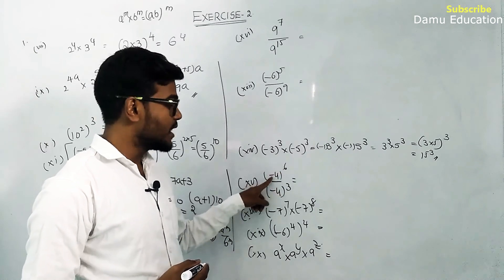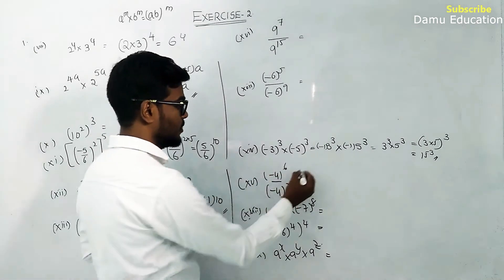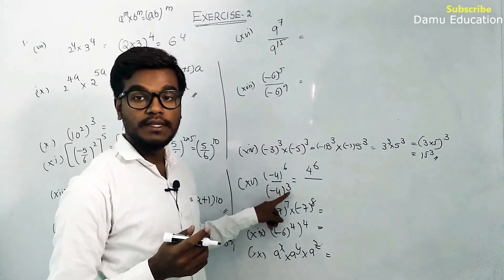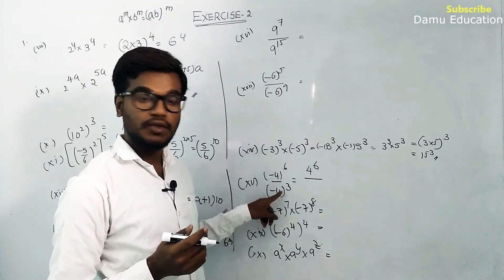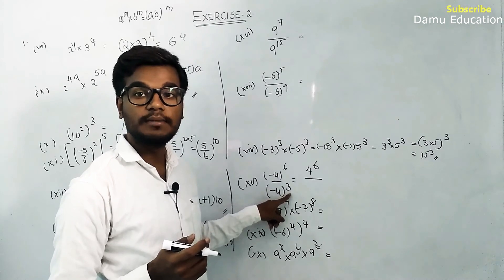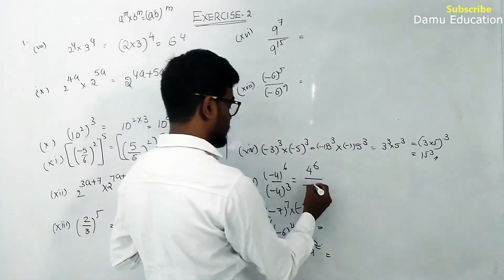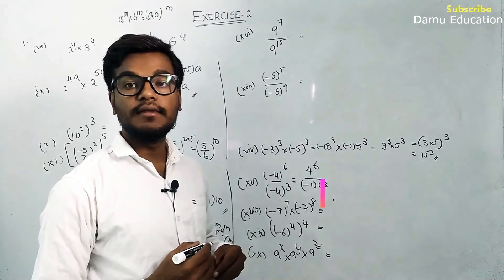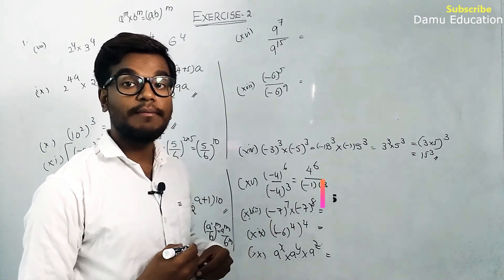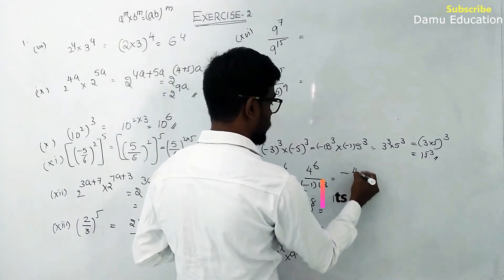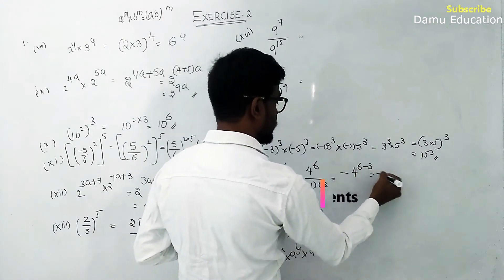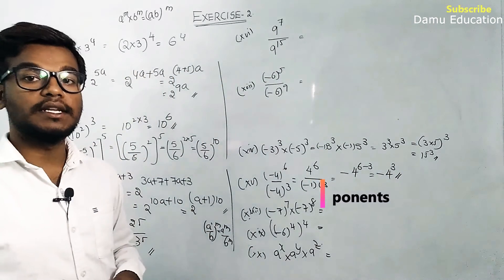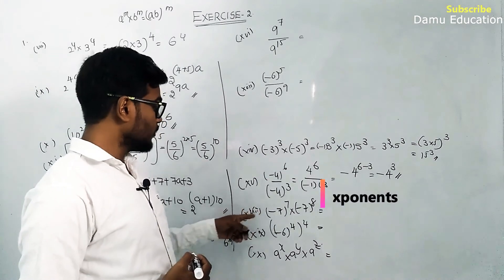Next: minus 4 whole power 6 by minus 4 whole cube. For power 6 (even), minus becomes plus, giving 4 power 6. For power 3 (odd), minus stays, giving minus 4 cube. Using a power m by a power n equals a power m minus n: minus 4 power 6 minus 3 equals minus 4 power 3.